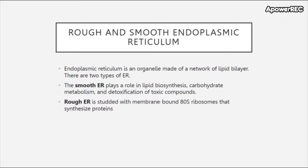There are two types of endoplasmic reticulum: rough and smooth. The endoplasmic reticulum is an organelle made of a network of lipid bilayer. The smooth ER plays a role in lipid biosynthesis, carbohydrate metabolism, and detoxification of toxic compounds. Rough ER is studded with membrane-bound 80S ribosomes that synthesize proteins. The reason why they call it rough ER is because under images it looks rough due to those 80S ribosomes that stud the membrane.